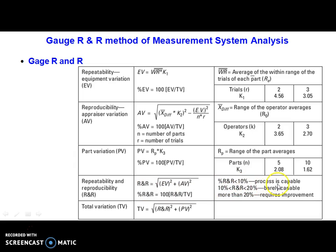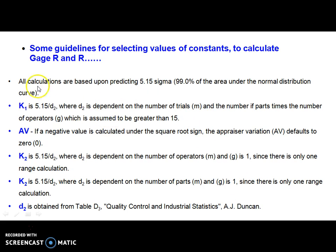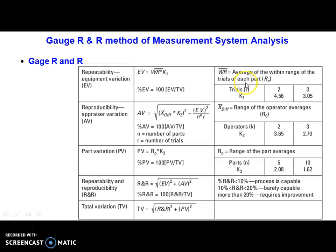As a guideline, if the R&R value is less than 10%, the process is capable. If it is between 10% and 20%, it is barely capable. If it is more than 20%, we can request some improvement. There are standard constants — k1, AV, k2, and d2 — which we select directly from a reference table and use in these formulas to calculate the R&R value. Thank you.